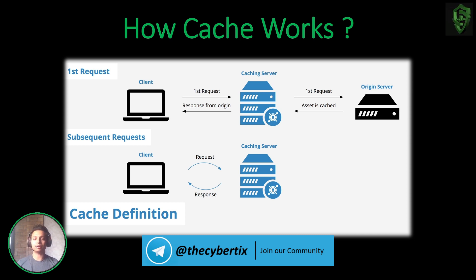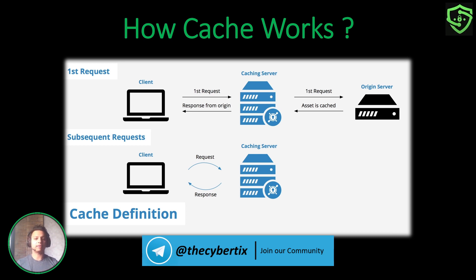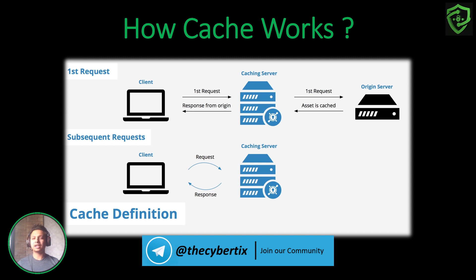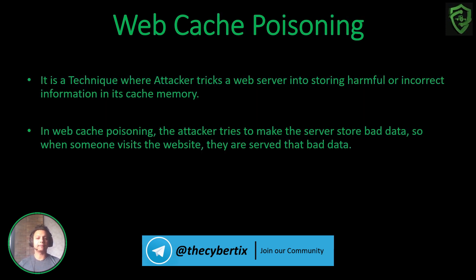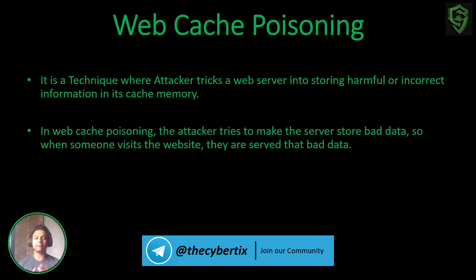The response is then sent to the client side. Now whenever, after a few hours or a few days, you come back and send the same request, it won't go to the origin server — you will interact only with the caching server, because it already has the stored response. So this is how cache works. Now, what do we mean by web cache poisoning? It is a technique where an attacker tricks a web server into storing harmful or incorrect information into the web cache memory.